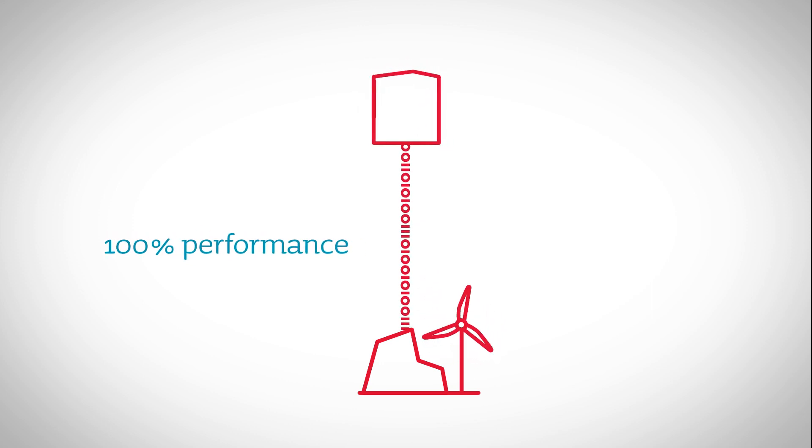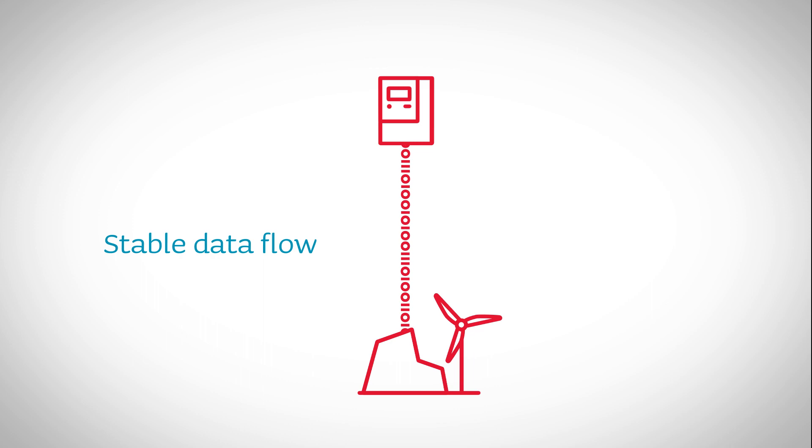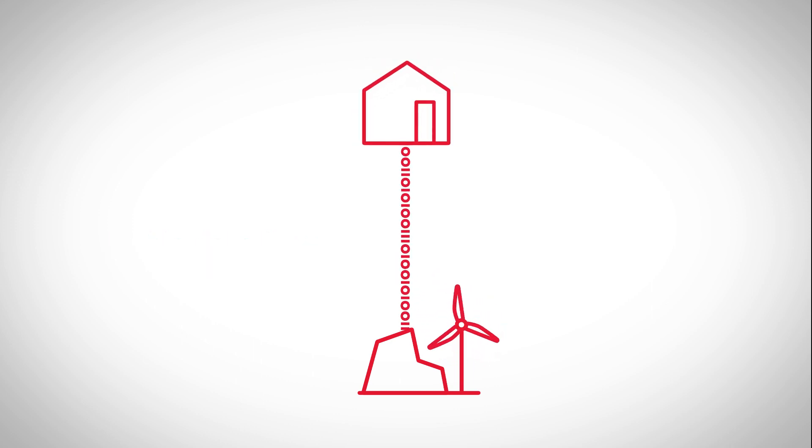100% meter reading performance and a consistently stable data flow is vital to unleash the true potential of the future. Stable communication is the key to reliable remote readings, crucial to the utility's business, and it's the backbone of remote functions like uploading new firmware or disconnecting meters—functions that save the utility time and money.